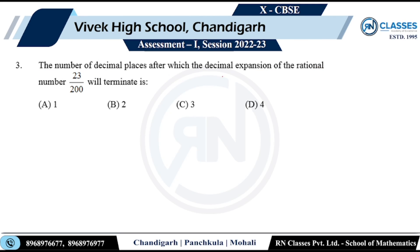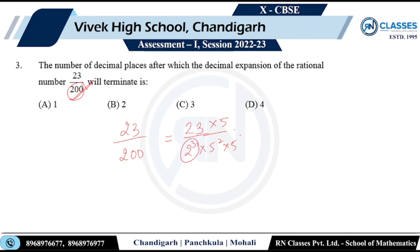The question asks for the number of decimal places after which the decimal expansion of a rational number will terminate. Consider 23/200. Prime factorize the denominator: 200 = 2 × 100 = 2³ × 5². To make factors of 10, I already have 2³, so I can multiply by one more 5 to get 10³. With three factors of 10 in the denominator, the decimal expansion will terminate after 3 decimal places.